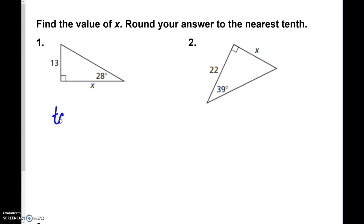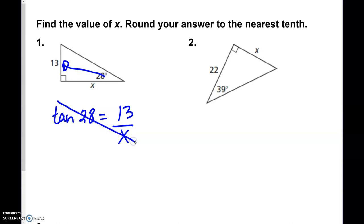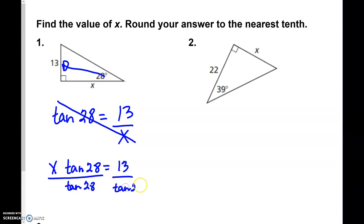We're going to take the tangent of the angle we know, which is 28. So the tangent of 28 is the opposite, which is 13, over X. We always solve these using cross multiplication, so this becomes X times the tangent of 28 equals 13. Now we divide by tangent of 28 on both sides — those cancel — and we end up with X equals 13 divided by the tangent of 28.